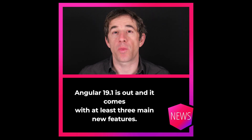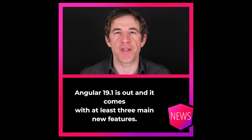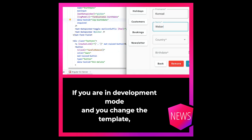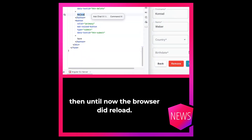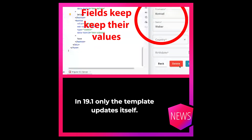Angular 19.1 is out and it comes with at least three main new features. The first is HMR for templates. If you are in development serve mode and you change the template, then until now the browser did a reload — meaning the state of the application was reset. In 19.1, only the template updates itself.